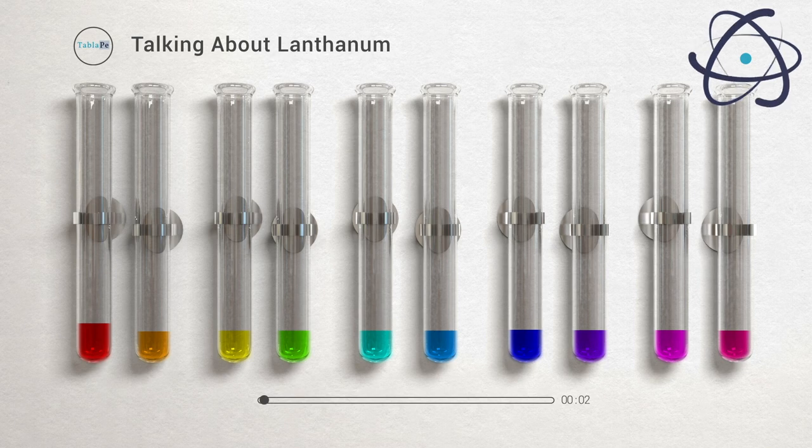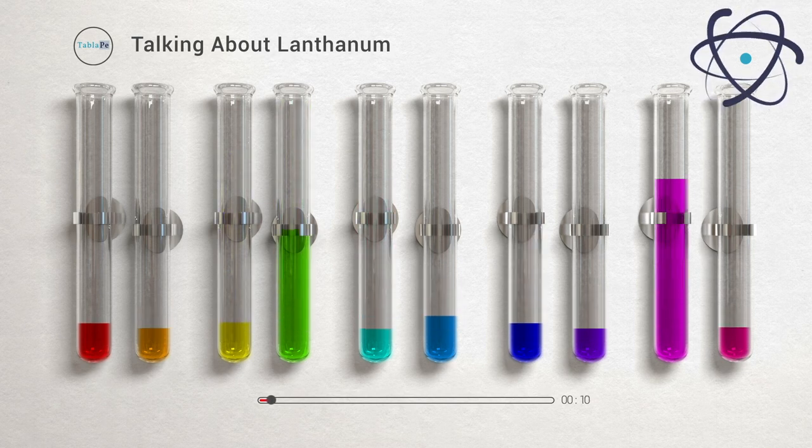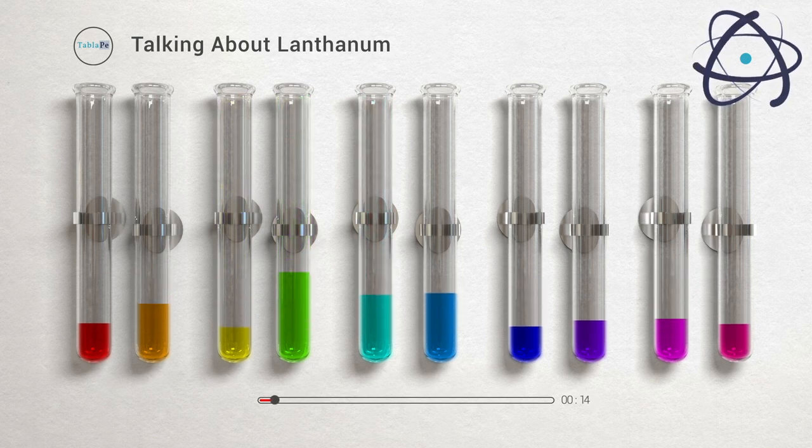Lanthanum belongs to the lanthanide family, which consists of 15 related elements. Lanthanum has an atomic number of 57. The names of these compounds are derived from the Greek words lanthanine, meaning to lie hidden, and lanthan, which is the name of lanthanum oxide.